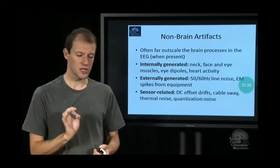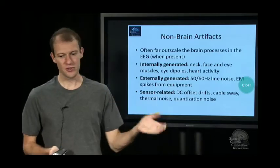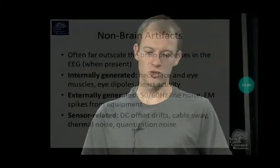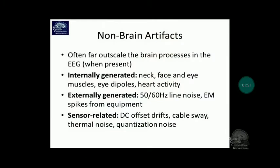And then there's some sensor artifacts. There's shifts in the signal amplitude called DC shifts or drifts, current basically. There's cable sway artifacts. If your cables are swaying around, you get lots of low-frequency shifts. There's thermal noise of the interface between the metal of the electrode and the skin.